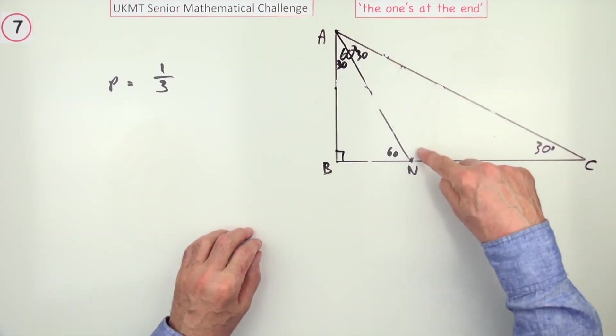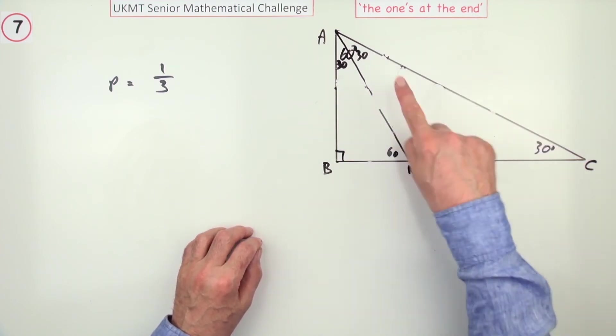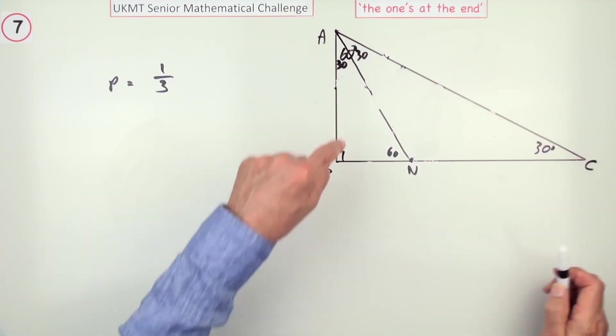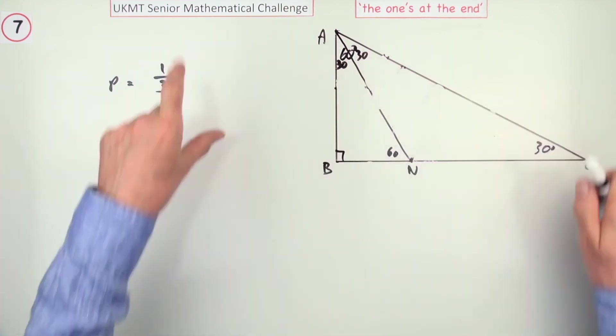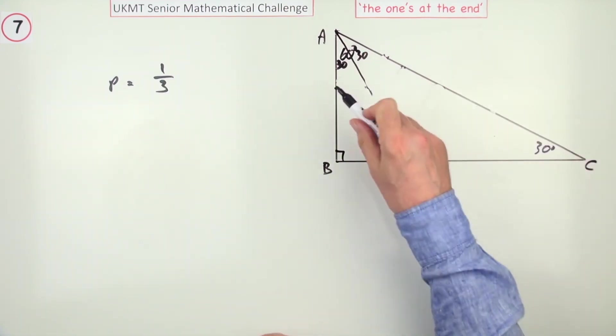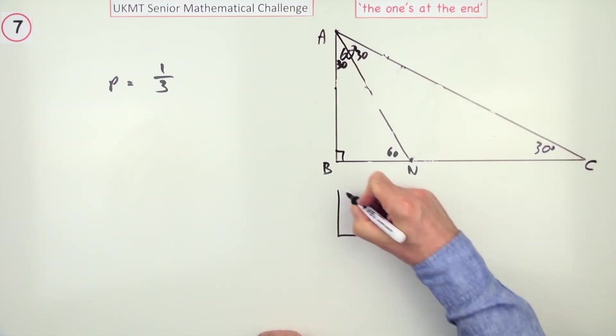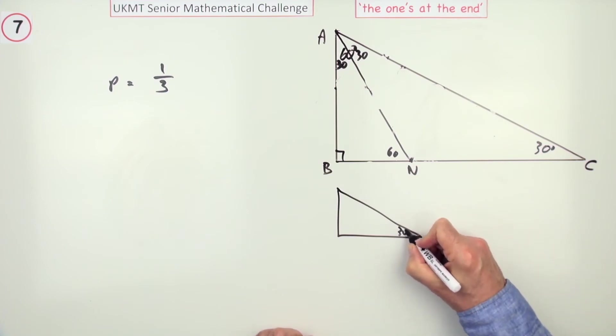Now, another way, a longer way, would be, instead of considering the kite, and then the three congruent triangles, just to say, well, what's the ratio of this triangle to the whole triangle? Well, you've got 60-30 triangles. The ratio of sides for 60-30 triangles is 1 to 2 to root 3.